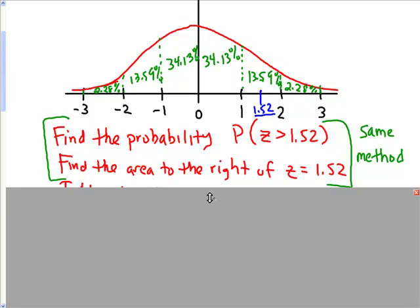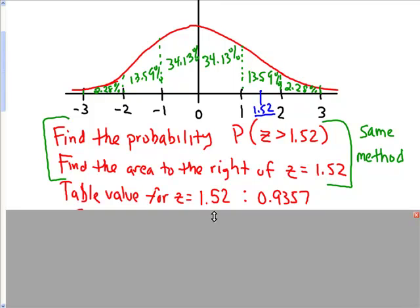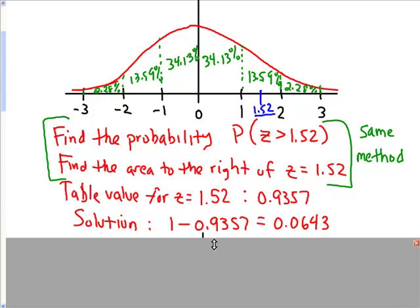Now I'm not going to bring up the table. You already know how to do the table method. I'm just going to review what we would get if we used the table. So our table value for z equals 1.52 is 0.9357, and because this is way to the right, we want all that area way to the right, so we have to subtract it from the rest of the curve, which is 1. So our solution was to subtract that 0.9357 from 1, and we got 0.0643.